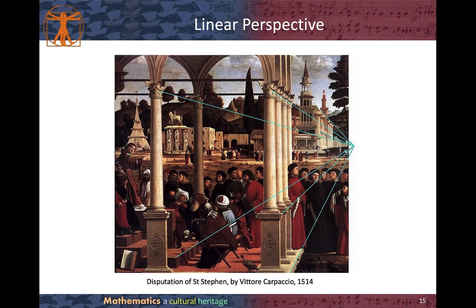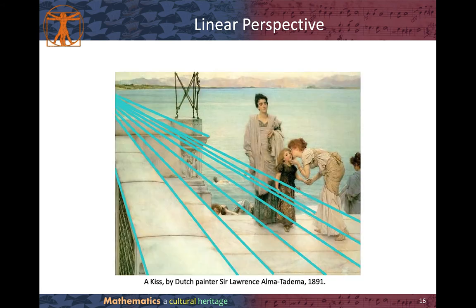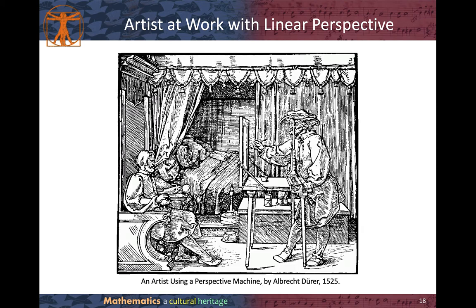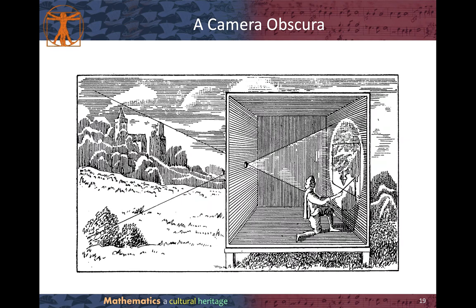This is Disputation of St. Stephen by Vittore Carpaccio in 1514. Another example using linear perspective is The Kiss by the Dutch painter Sir Lawrence Alma-Tadema in 1891. This is a Draftsman Drawing a Recumbent Woman by Albrecht Dürer, where we see a perspective machine in the middle of the painting helping the draftsman achieve correct linear perspective. Another painting, An Artist Drawing a Lute, was also painted by Albrecht Dürer, using a linear perspective machine. There is also the Camera Obscura — a dark room that uses the property that light travels in a straight line so the painter inside can draw an inverted picture of the scenery.